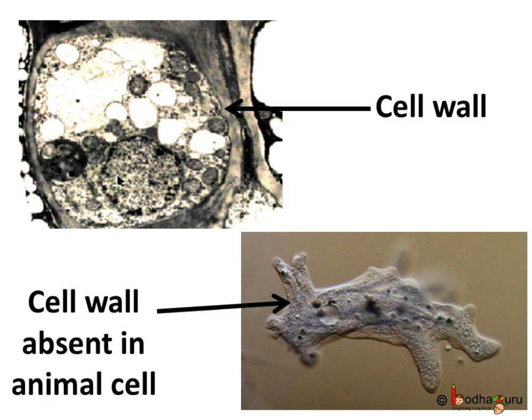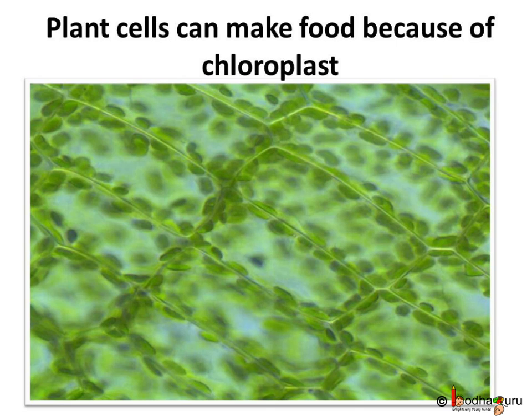Animal cells only have a cell membrane, but plant cells have a cell membrane and also a cell wall. We know that plants make their own food through the process of photosynthesis. Chlorophyll, which helps in photosynthesis, resides inside an organelle called plastid. These green-colored plastids are called chloroplasts. So plants have these colored organelles called plastids.